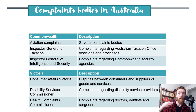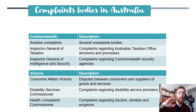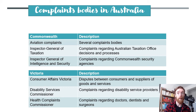Just to reiterate, you don't actually need to memorise all of these. I'd honestly recommend knowing the Equal Opportunity Commission the best, because that's the most useful one. And then the next one I'd recommend knowing pretty well is Consumer Affairs Victoria — this is going to come up in your questions. They take disputes between consumers and suppliers of goods and services.